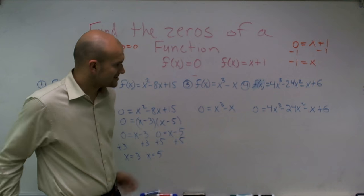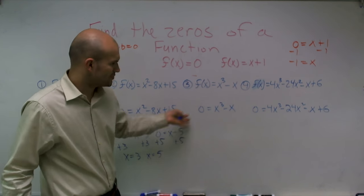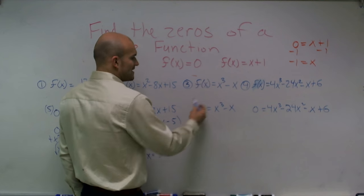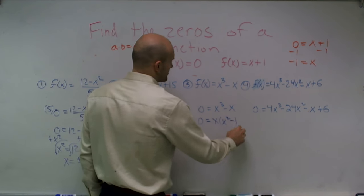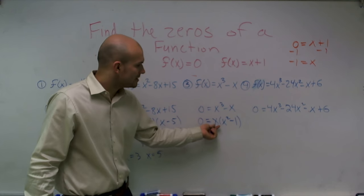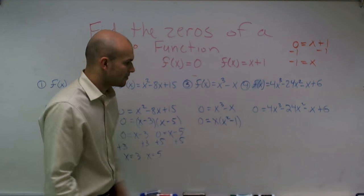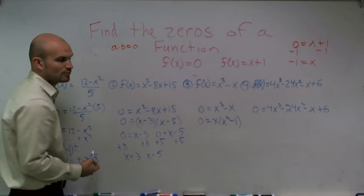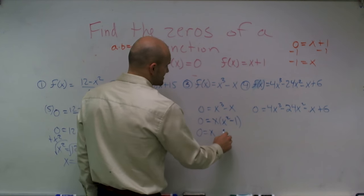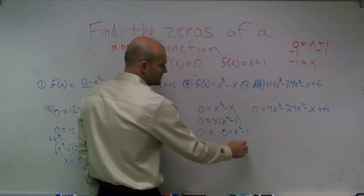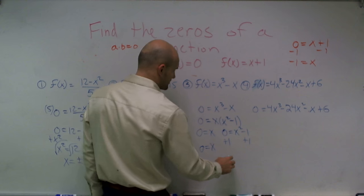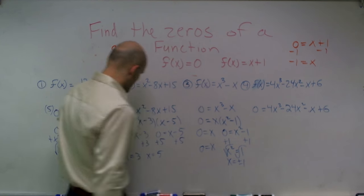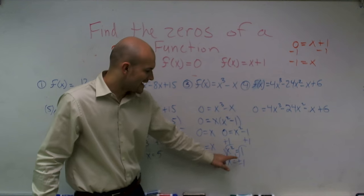The third practice problem: what do I do? Always try to see what you can factor out — I can factor out an x. So 0 equals x times x squared minus 1. Now I have a monomial times a binomial, so by the zero product property: 0 equals x, and 0 equals x squared minus 1. Solving, I get x equals 0, and x squared equals 1, so x equals plus or minus 1. Therefore, the zeros are x equals 0 and x equals plus or minus 1.